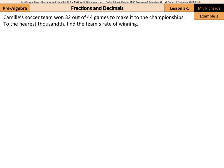In example three, Camille's soccer team won 32 out of 44 games to make it to the championships. To the nearest thousandth, find the team's rate of winning. Well, what you're going to do here is to take the 32 and divide it by 44. Now, since we're looking for the nearest thousandth, tens, hundreds, thousandths, we need to go out to at least the ten thousandths, so we know whether we need to round.